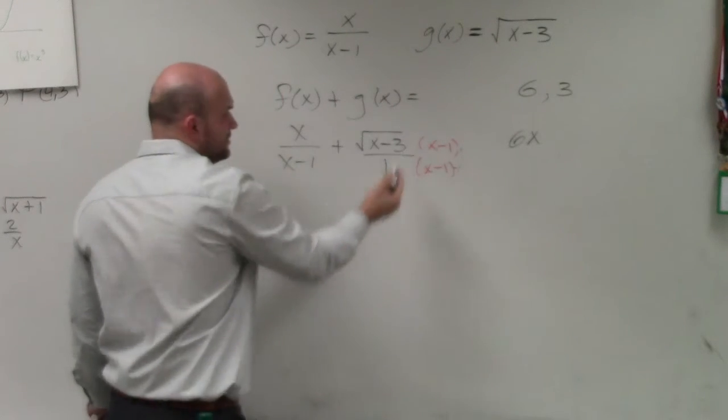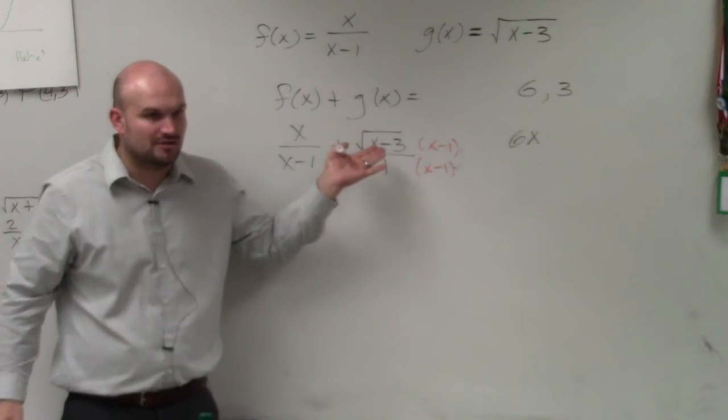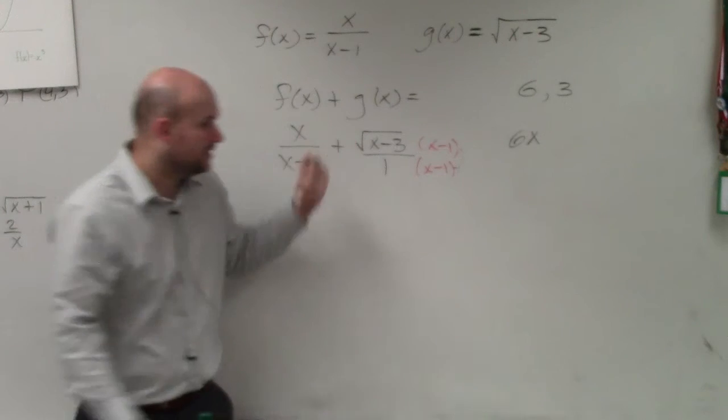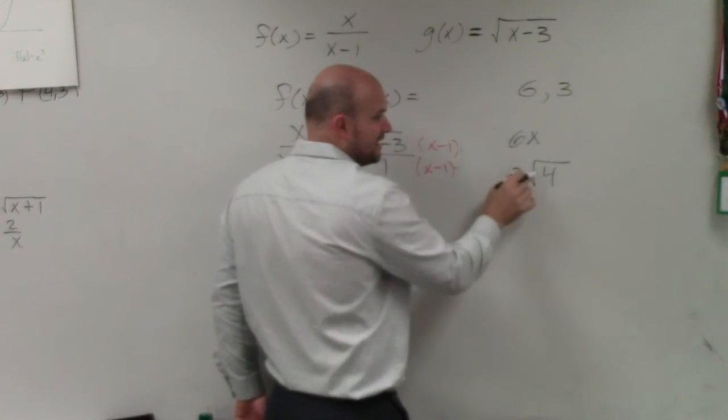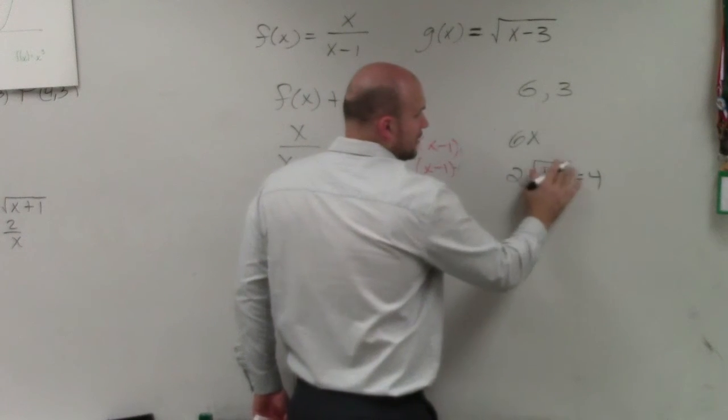Now, I multiply this through. Can you multiply an expression times a radical? Well, let's take a look. If I have the square root of 4 times 2, we know that answer is equal to 4. Agreed with me?